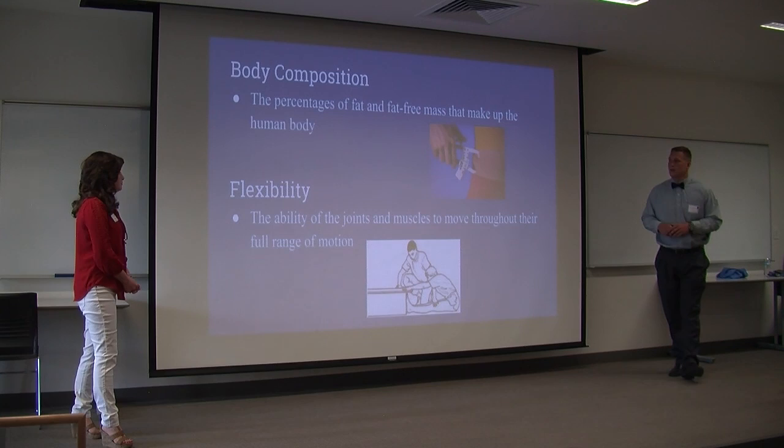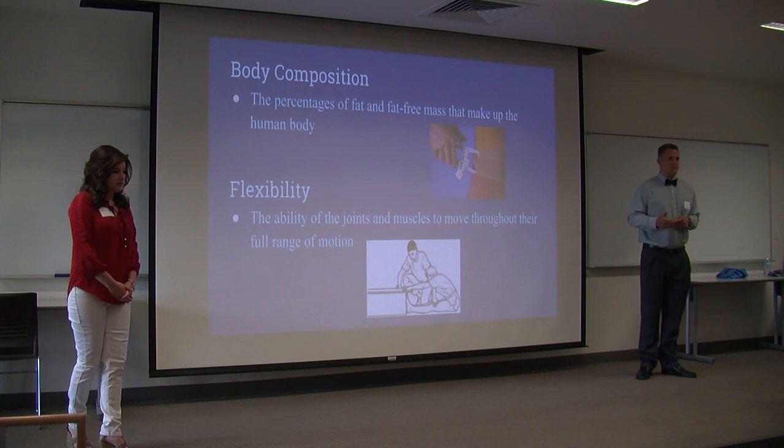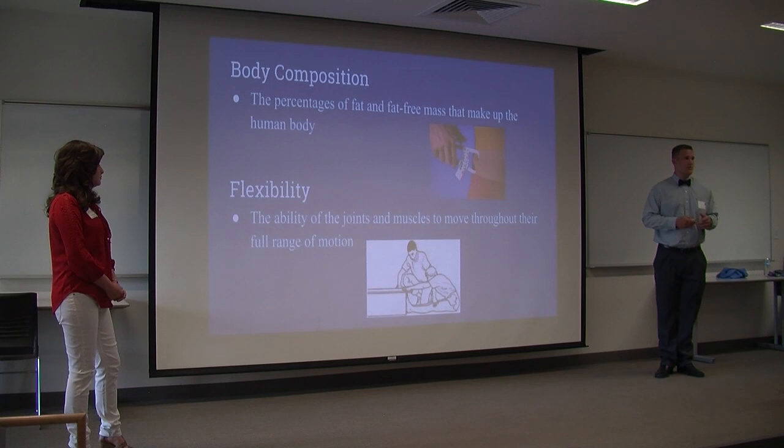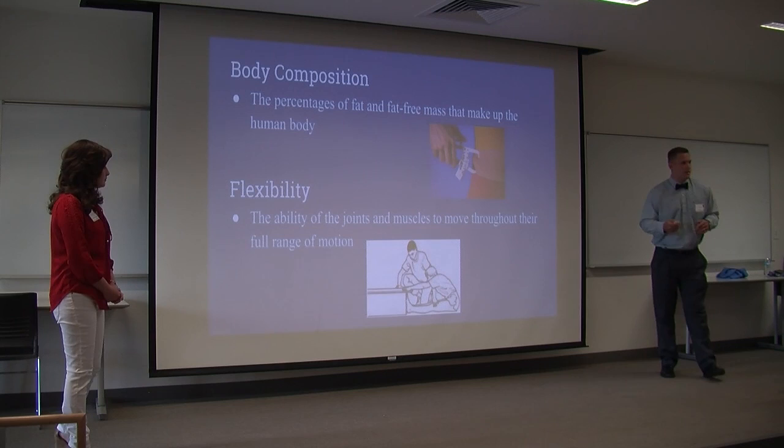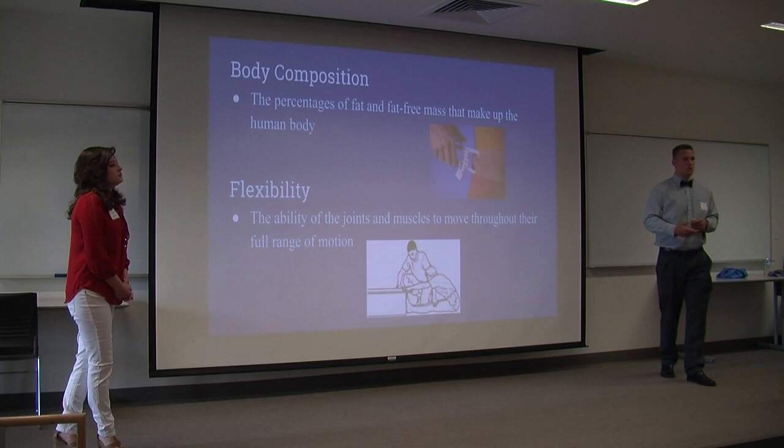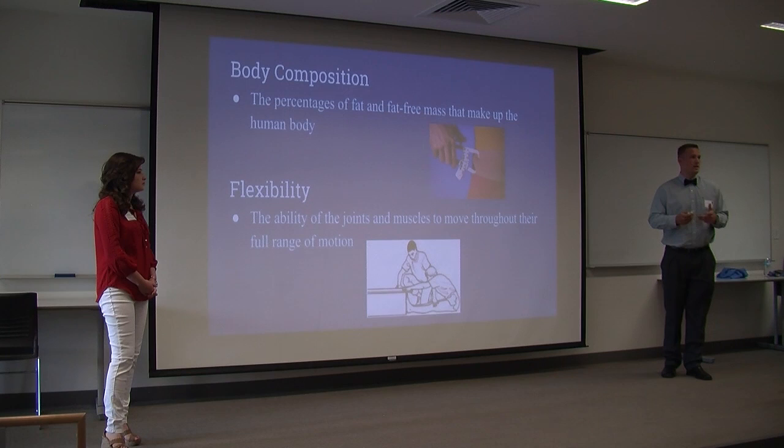Next is flexibility — the ability of the joints and muscles to move throughout their full range of motion. The test we used is the sit-and-reach test. Other things you can do include reaching down to your toes, holding it for 10 to 30 seconds, or different shoulder stretches where you put your arm behind your head, all working the flexibility and putting muscles through their full range of motion.